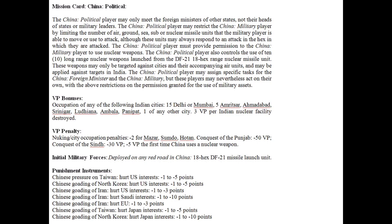China's card shows detailed punishment instruments at the bottom, where China can have influences on other parties such as the Americans, Saudis, Japan, and the European Union — by doing things like putting pressure on Taiwan or goading North Korea to distract the Americans.